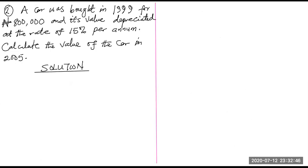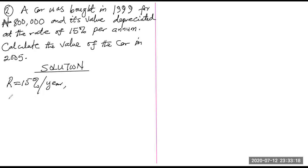Question two: a car was purchased in 1999 for ₦800,000 and its value depreciated at 15% per annum — a constant rate. Calculate the value of the car in 2005. The number of years n equals 2005 minus 1999, which is six years. The rate and n are both in years, so they are compatible.